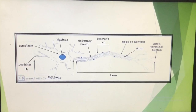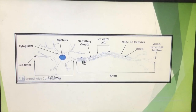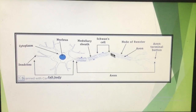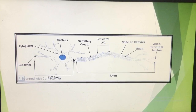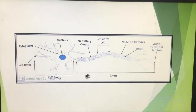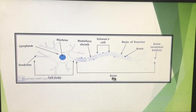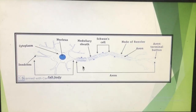The dendrites bring the information or impulse to the cytone. From the cytone, only one long nerve fiber arises — this is known as the axon. There is only one axon per neuron and it is quite long. The axon carries the impulse from the cytone forward.